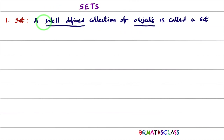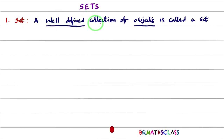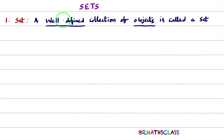We'll try to understand what is this well-defined collection of objects. Objects means things which are either living or non-living. We'll try to understand what is 'well-defined' with a few examples.